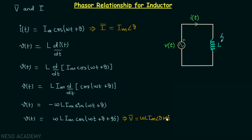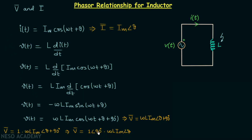Now we will do some modifications in the obtained result to find the relation between V phasor and I phasor. We can write V phasor equal to 1·ωL·Im ∠(θ + 90°), or equivalently as 1∠90° multiplied by ωL·Im ∠θ. We know that 1∠90° is the complex number j, and Im ∠θ is our I phasor. Therefore we can finally say that V phasor is equal to jωL times I phasor.